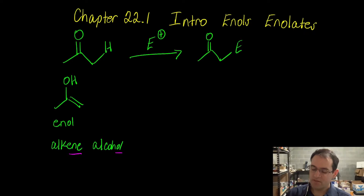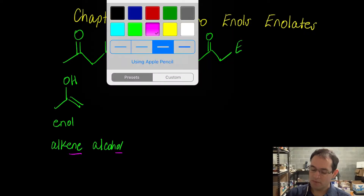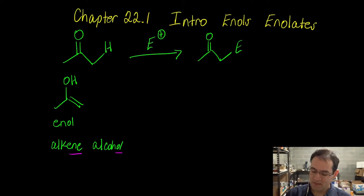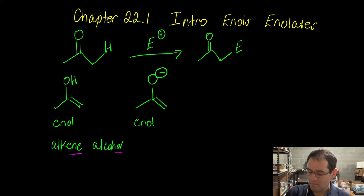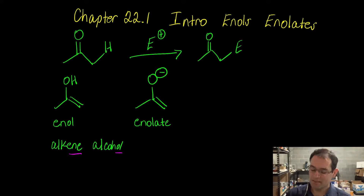The enolate is very similarly related, except it looks like an alkoxide. This is called the enolate, or the enolate ion.